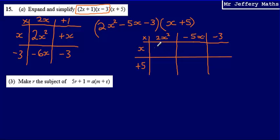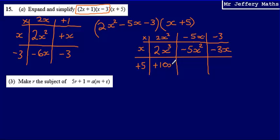x multiplied by 2x squared will give me 2x cubed. x multiplied by negative 5x will give me negative 5x squared. Then x multiplied by negative 3 will give me negative 3x. 5 multiplied by 2x squared will give me 10x squared. 5 multiplied by negative 5x will give me minus 25x. And then 5 multiplied by negative 3 will give me minus 15.